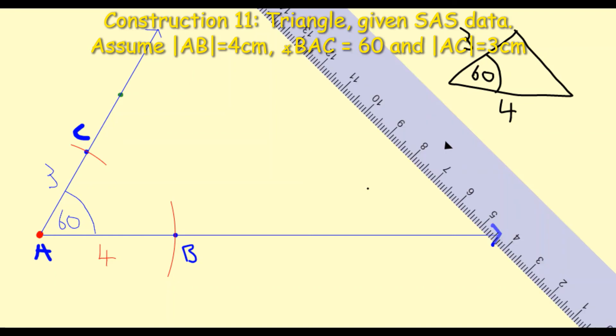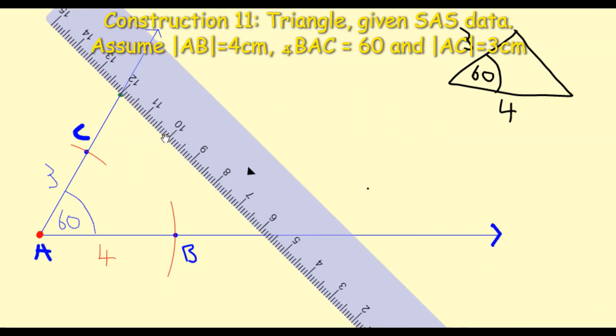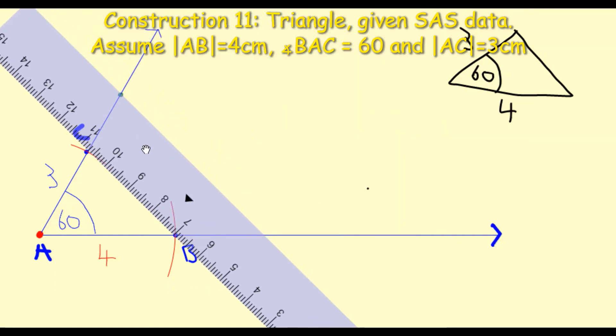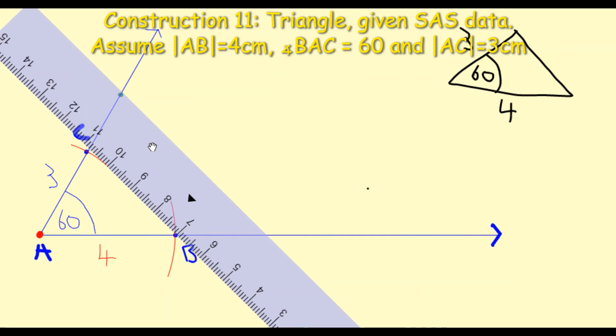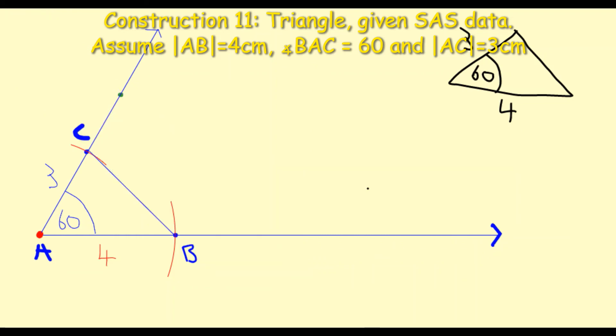So with my ruler, I'm going to slide it over here now to where it goes through the point C and B. And I'm going to connect them with my pencil as best I can. And I get the line going from B to C. And we have now created the triangle.